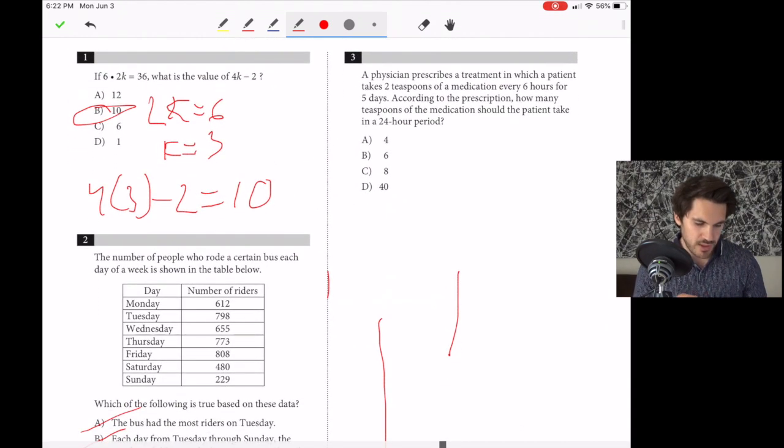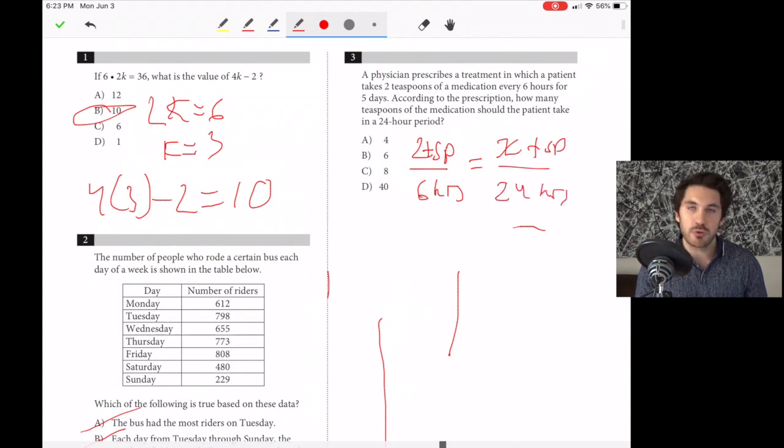Number three, a physician prescribes a treatment where a patient takes two teaspoons of medication every six hours for five days. How many teaspoons should the patient take in a 24-hour period? Set up a proportion: 2 teaspoons over 6 hours equals x teaspoons over 24 hours. Cross multiply: 6x equals 48, so x equals 8. The answer is C, 8.